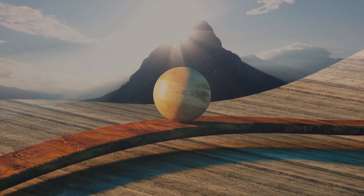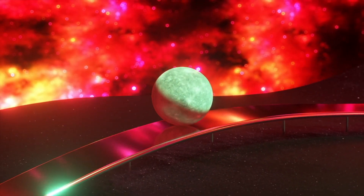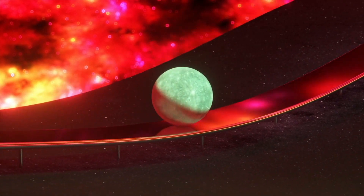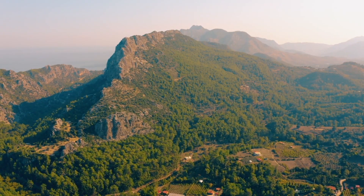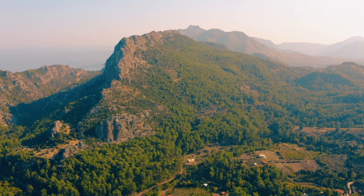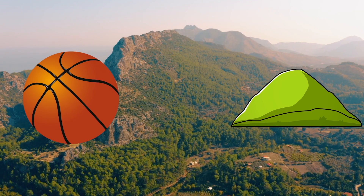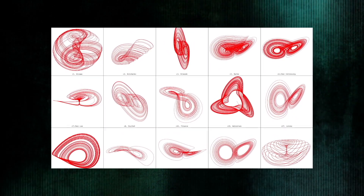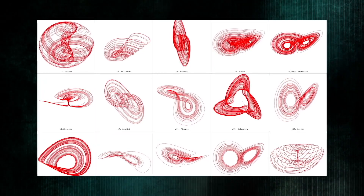Like a ball rolling down a hill, it's easy to figure out how things will happen at the start. You just need to know some things, like how heavy the ball is and how steep the hill is. Then you can guess how fast and how far the ball will roll. But when things get chaotic, it's not so easy. Even small changes could make a big difference in what happens later on. That's the tricky part about chaotic systems — they're super sensitive to even the smallest changes in the beginning.